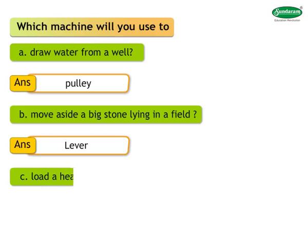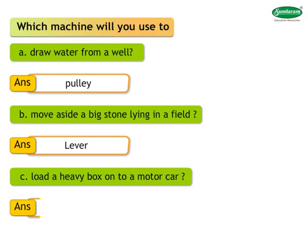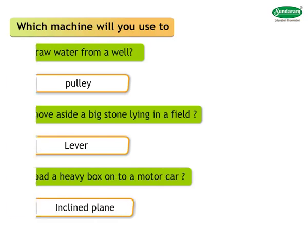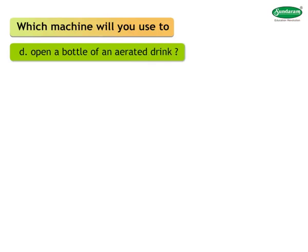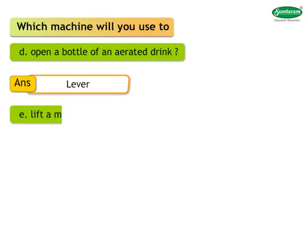C. Load a heavy box onto a motor car. Answer: Inclined plane. D. Open a bottle of an aerated drink. Answer: Lever.